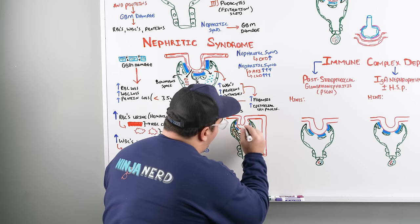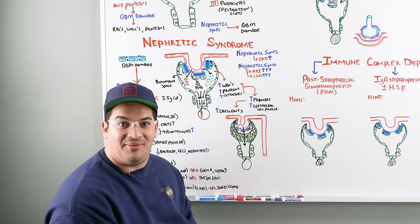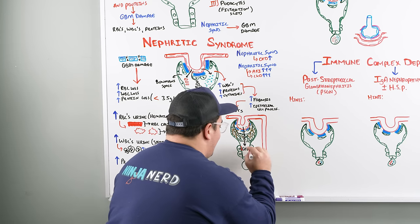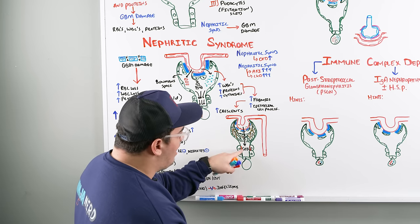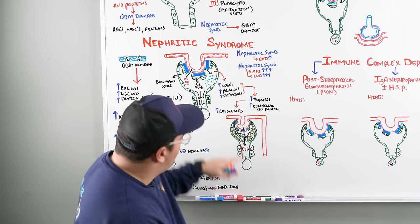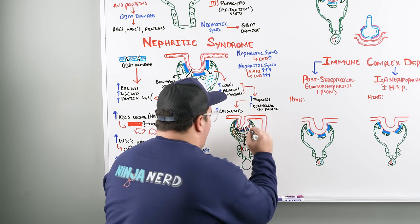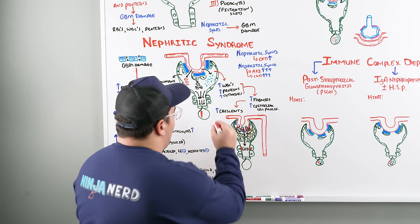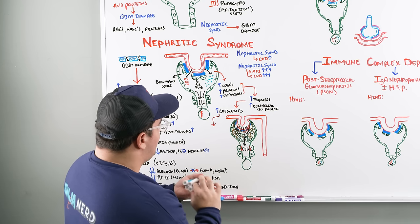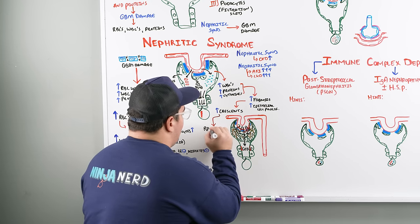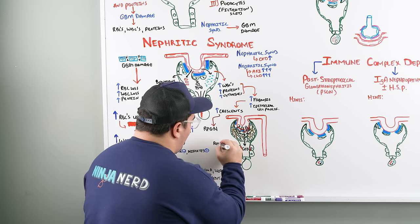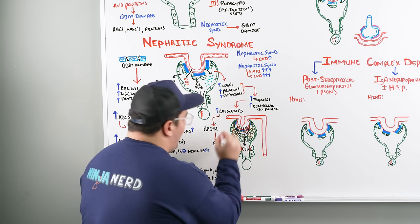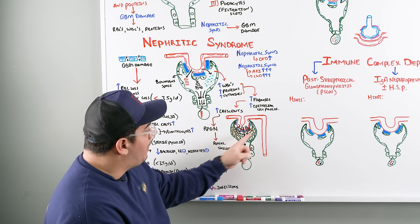With all this crescent formation, the glomerular filtration rate is going to drop significantly. The crescents block off filtrate flow, which can lead to rapidly progressive glomerulonephritis, which can lead to renal failure. That is the big fear of nephritic syndromes — these crescents can literally block the flow of filtrate and drop the GFR.